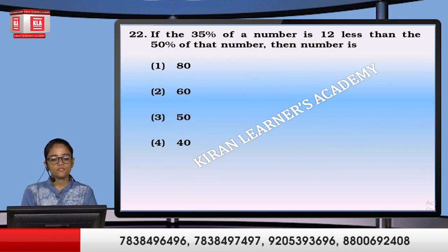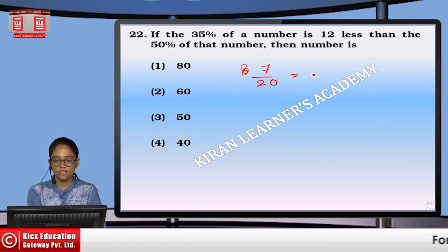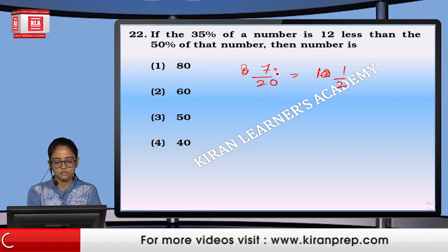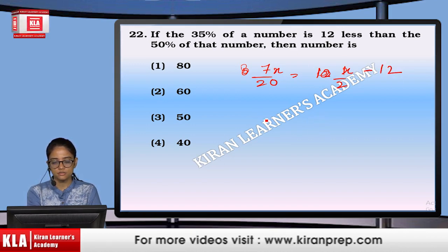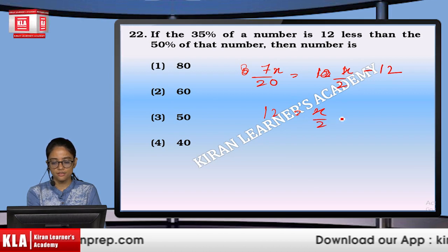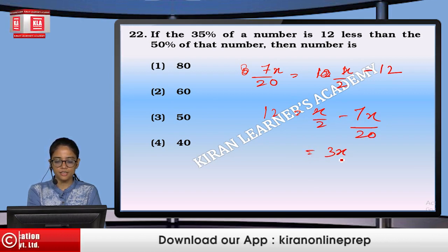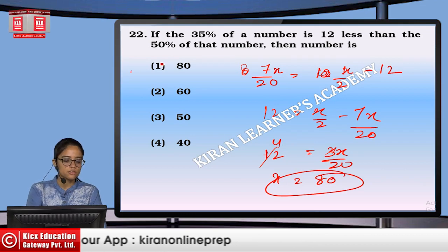If 35% of a number is 12 less than half of the number, then: 12 equals X/2 minus 7X/20, giving 3X/20 equals 12, so X equals 80. Option number 1.